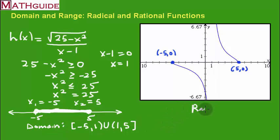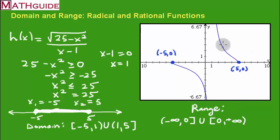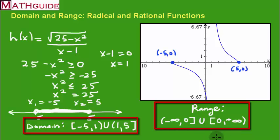For range, we look at y values. The bottom-most branch comes from negative infinity and goes to zero — it is equal to zero. The other branch goes from zero all the way up to positive infinity. We unite them. The value zero is listed twice with equality, which isn't necessary, but it's not wrong — it exemplifies what's happening between both branches.